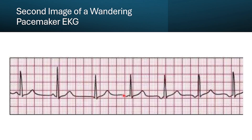Here's another image of a wandering pacemaker. We can see upright P waves, a flat P wave, and then an inverted P wave. The QRS complexes are matching up — sometimes we're missing a P wave, but it's in the general same spot every time. The QRS complex is less than 0.12 seconds. The PR interval, whenever we are able to read it, is less than 0.2 seconds, or one big red box.